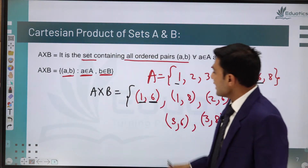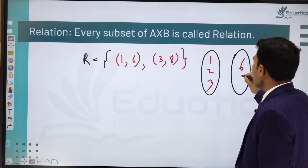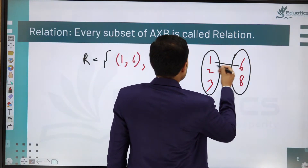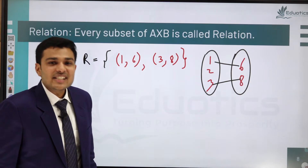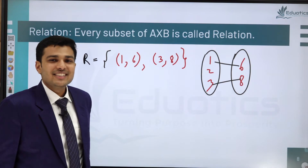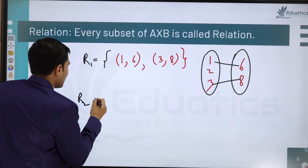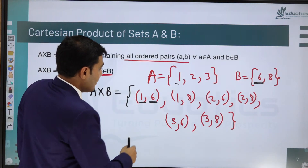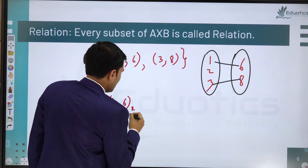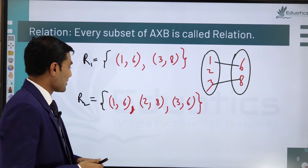Set A has elements 1, 2, 3. In our relation {(1,6), (3,8)}, only 1 and 3 are connected — there is no answer for 2. So this is only a relation, not a function.